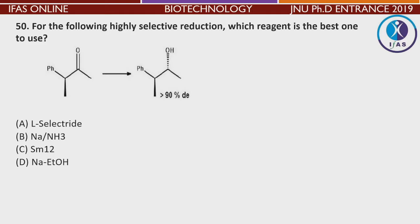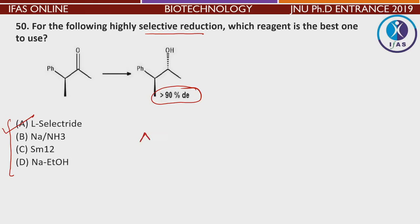For the following highly selective reduction — which reagent is best? Although all are reduction agents, for obtaining 90% product with high selectivity, the best answer is L-selectride. So the answer is A.